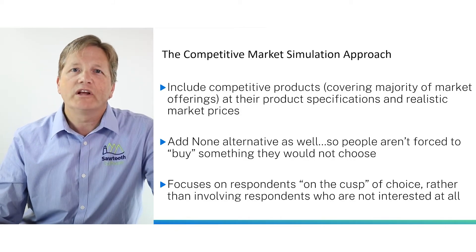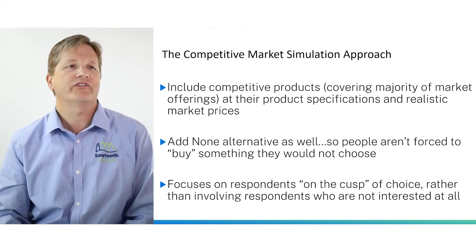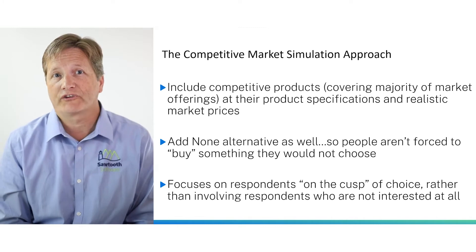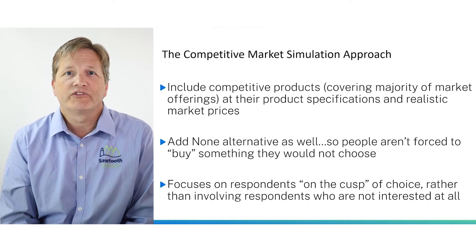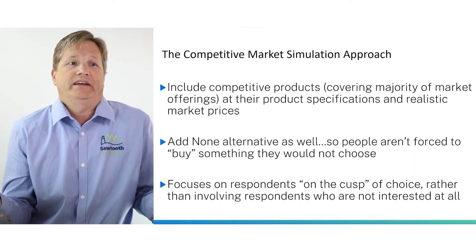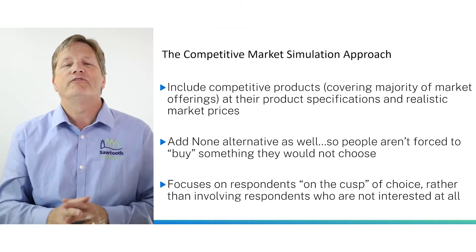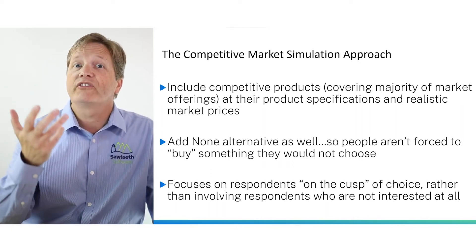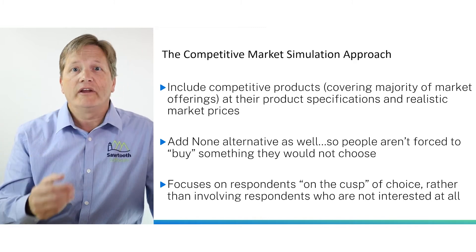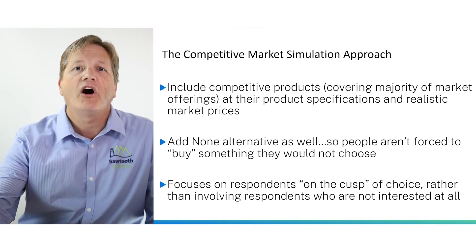A competitive market simulation approach would include a relevant, rich set of offerings covering the majority of the market offerings in your space, and potentially the none alternative, which is available in choice-based conjoint, allowing buyers to say in your simulator that they wouldn't buy anything. This type of analysis with five, six, or seven competitors plus the none would focus on respondents on the cusp of choosing your product alternative with its enhancement, rather than just averaging the willingness to pay across all respondents, many of whom would not be interested at all in your offering.